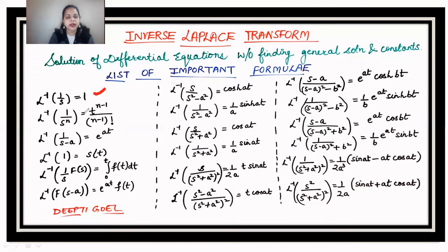Similarly, we know that the Laplace of t raised to power (n−1) is (n−1)! divided by s^n. Taking Laplace to the other side, we get the formula: Laplace inverse of 1/s^n equals t^(n−1) divided by (n−1) factorial.